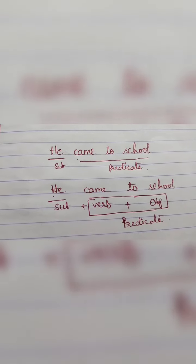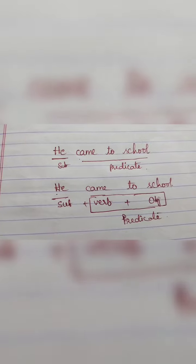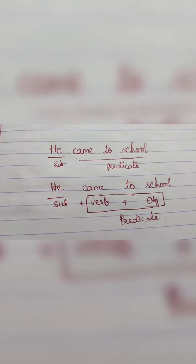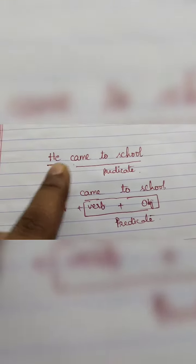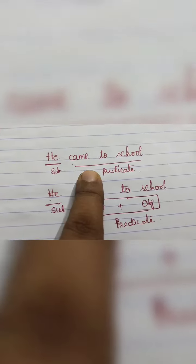Hi, hello, welcome back to Suresh channel. In this video, let us learn about subject and predicate. Subject is the one who does the action. For example, 'He came to school' - it is he doing the action, that is going to school, so 'he' is the subject.